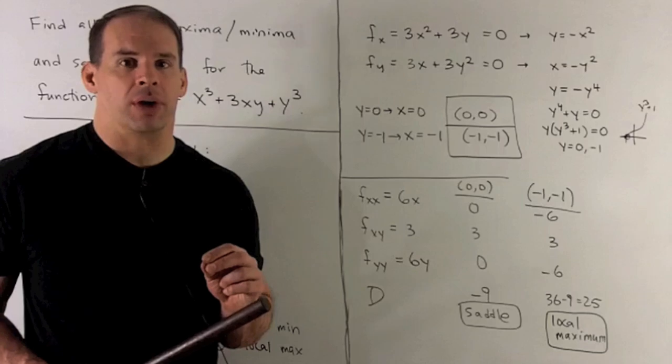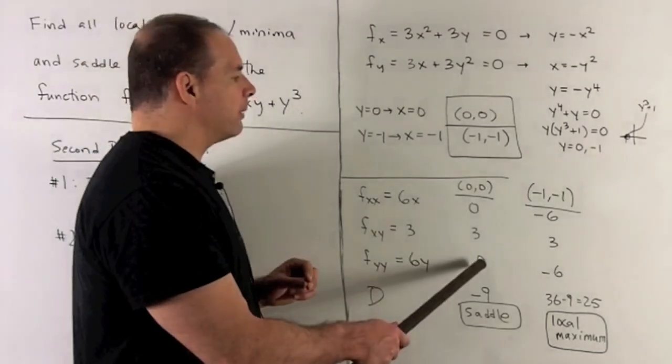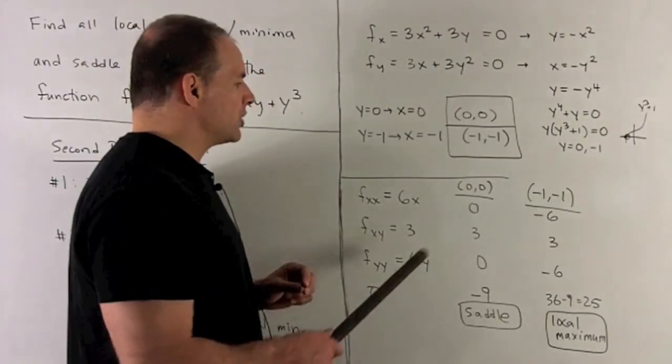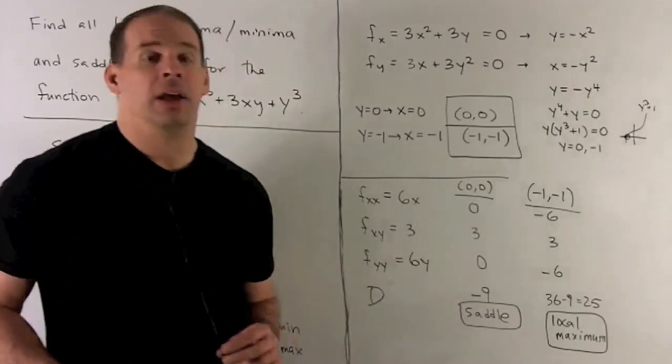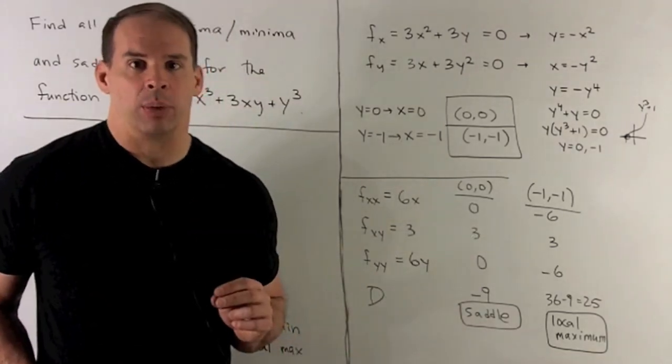For our first point, (0,0), we evaluate and compute D. So, that's just going to be 0 times 0 minus 3 squared is minus 9. (0,0) is going to be a saddle point.